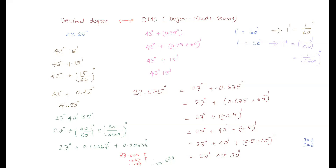Tomorrow we will discuss radian measure and the relation between degree measure and radian measure, since degree and radian are the most common units used for measuring angles. We will also review some basic topics from last year. The base should be clear — that is why we are going slowly, because this is one of the most important chapters. Once the base is clear, the rest is smooth and easy.